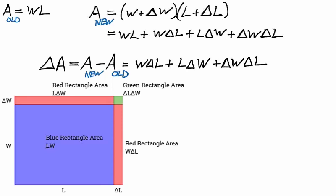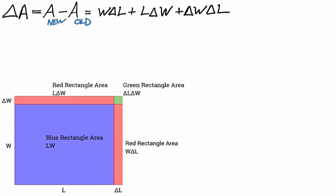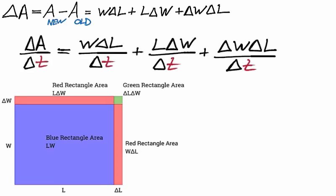Suppose that both width and length change over time in a differentiable way. We can express both w and l as differentiable functions of time t. Since area is the product of two functions with respect to time, it is also a function with respect to time.